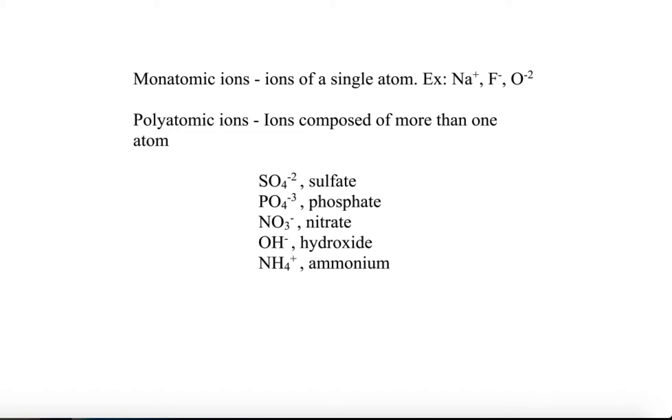In a polyatomic ion, these are ions that have more than one atom. Usually, there's some kind of combination of a non-metal with oxygen, not always, but here are some examples. Sulfate. This has one sulfur, four oxygen molecules. This compound here has an overall minus two charge. It is not neutral.